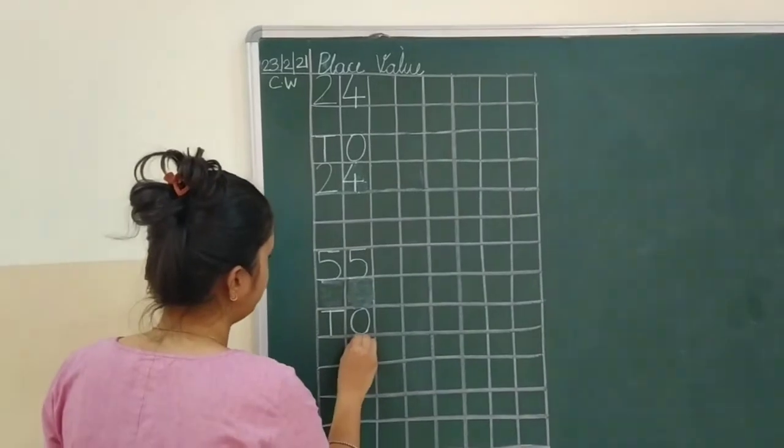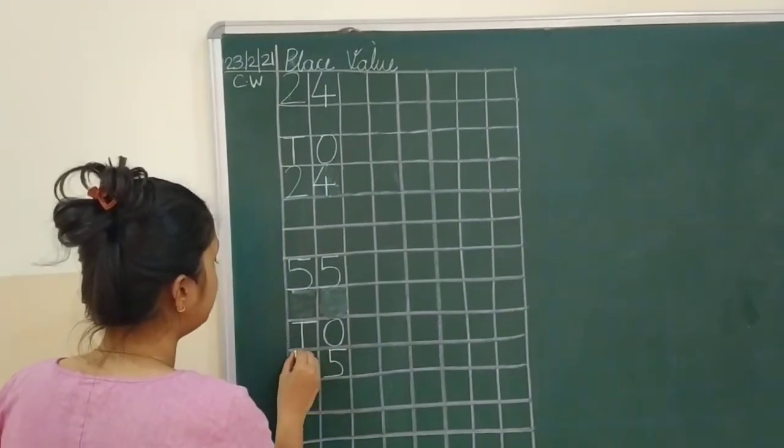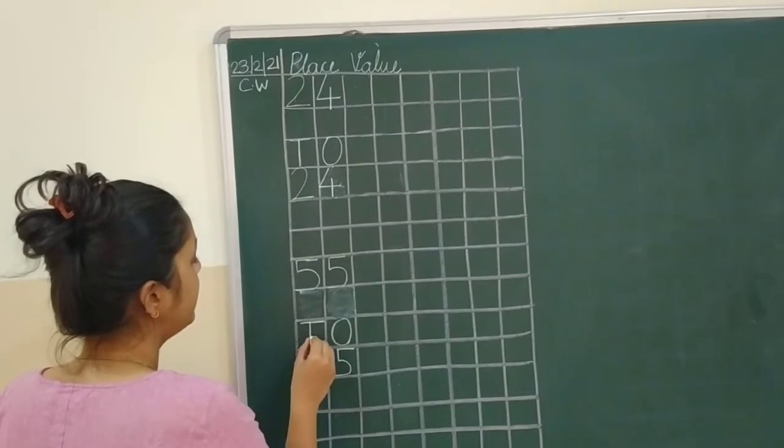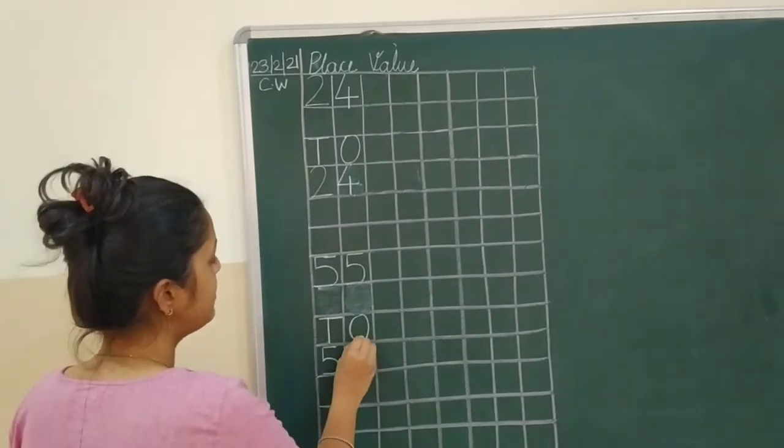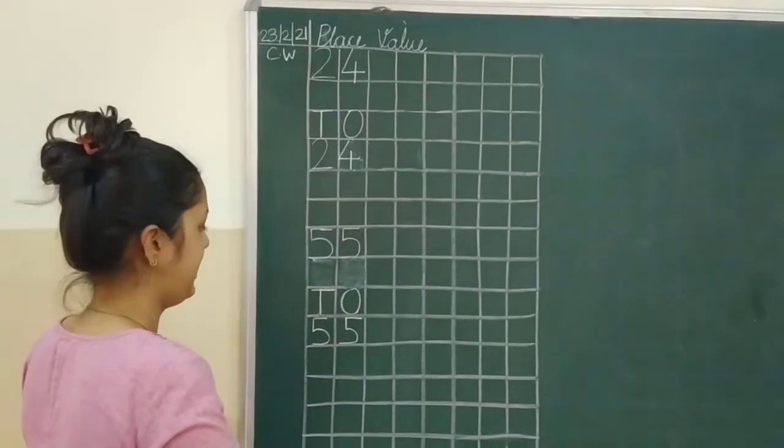So, we will write 5 over here, ones. Again, next 5 over here, tens. Ones, tens. Okay, next.